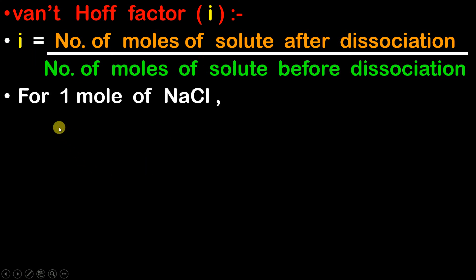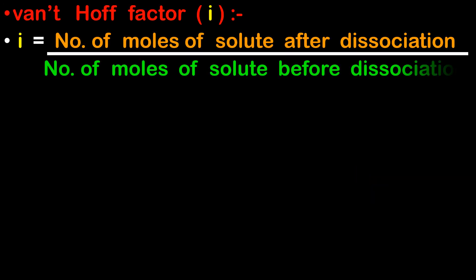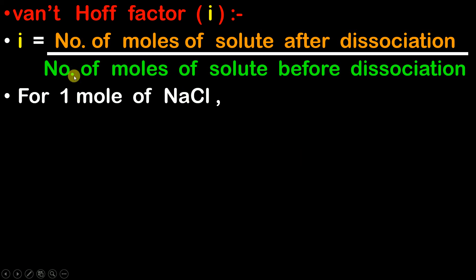For example, let us say you have 1 mol of NaCl and you want to find out the value of i. We know that when 1 mol of NaCl decomposes, it gives us 2 mols. Therefore, the value of i will be: in the numerator, number of moles of solute after decomposition — that is 2 — and number of moles of solute before dissociation is 1. So 2 upon 1 gives you i = 2.